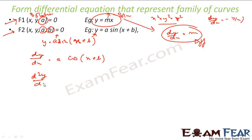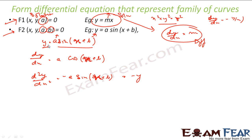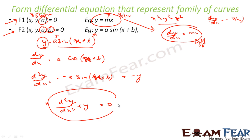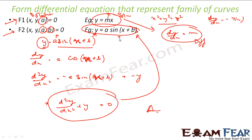Differentiating again gives d²y/dx² = −a·sin(x + b). Now notice that −a·sin(x + b) is nothing but −y. So the equation I get is d²y/dx² + y = 0. That is my differential equation obtained from this solution y = a·sin(x + b).